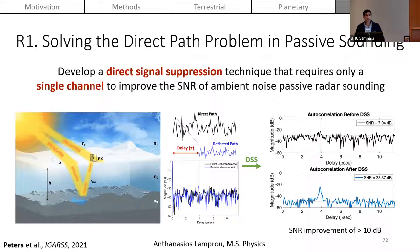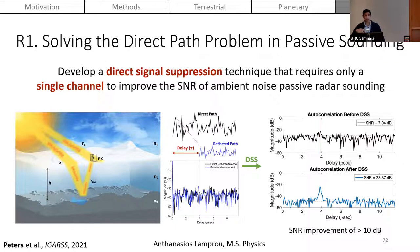Another question: have you been able to resolve individual internal layers? Sean replies: in the current measurement they have not resolved individual layers due to very low SNR. That's why the direct signal suppression technique is being developed — to resolve features with lower SNR and isolate smaller echo peaks.